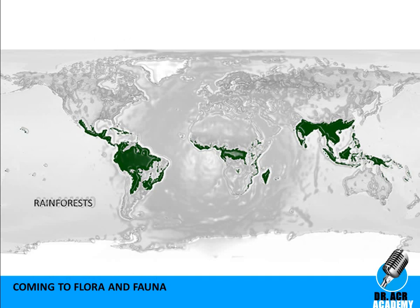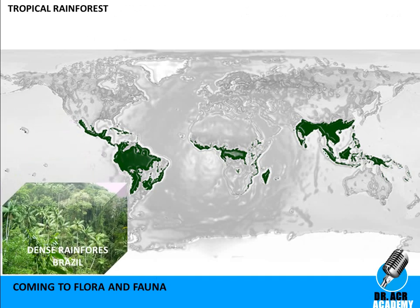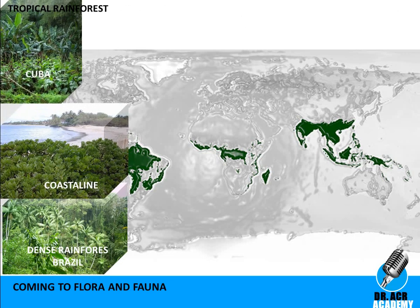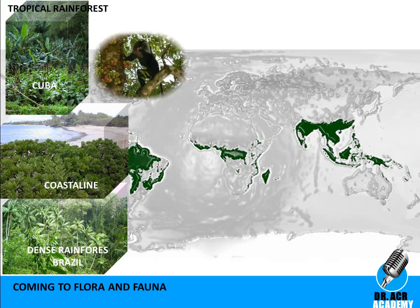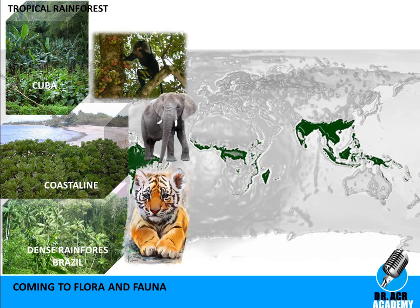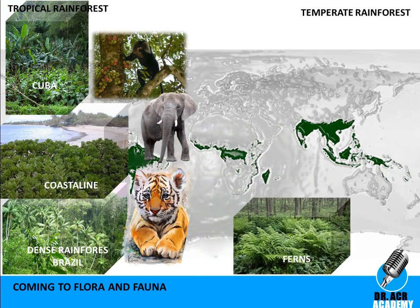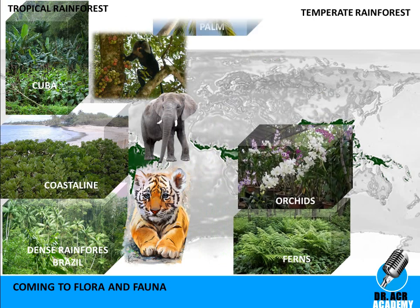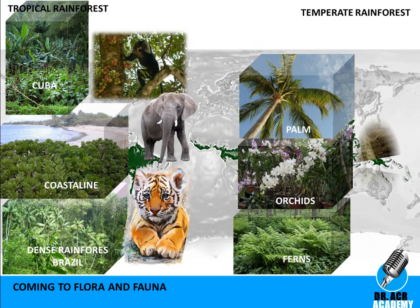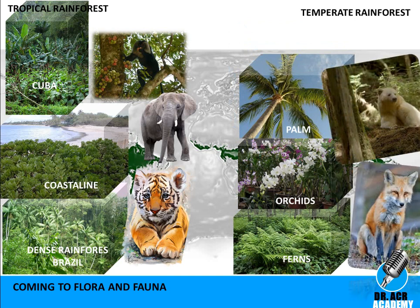Coming to flora and fauna: here you can see the animals of tropical rainforests and temperate rainforests, along with plants such as orchids and palms found in these ecosystems.